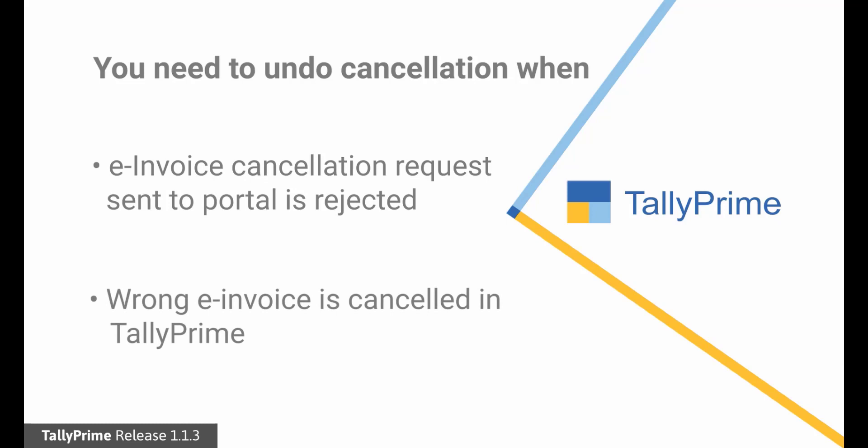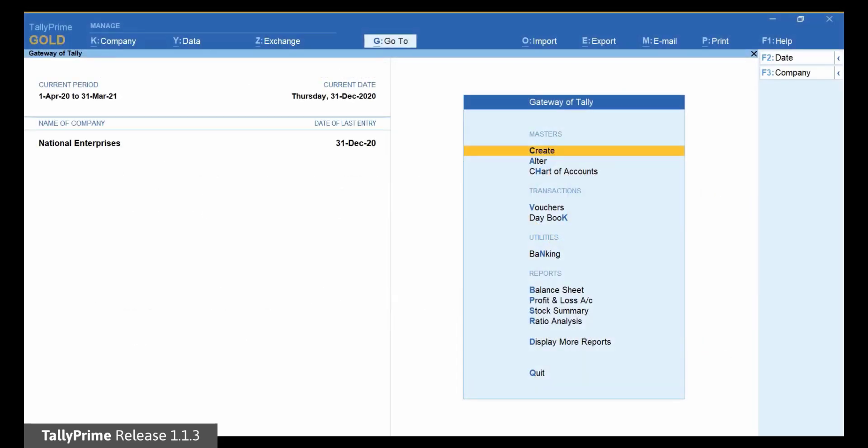Therefore, you want to undo the cancellation and go on to cancel the correct invoice before sending the cancellation request to the e-invoice portal. The Undo Cancellation feature provided in Tally Prime allows you to undo the cancellation such that a cancelled e-invoice is reverted to its earlier status. Let us see how to do it.